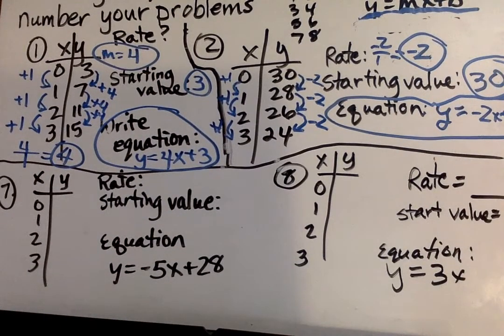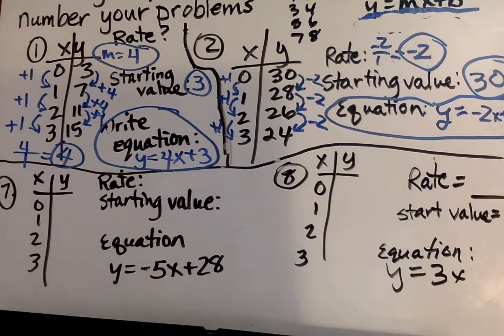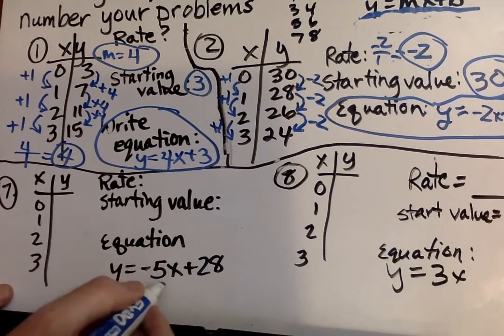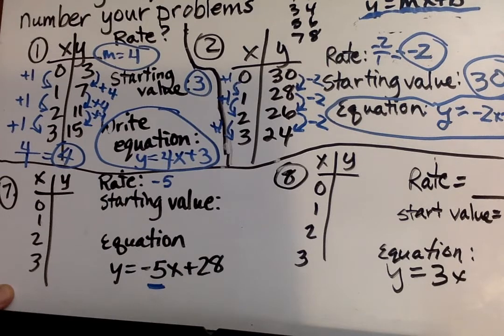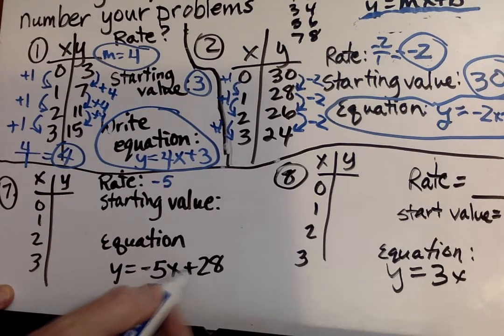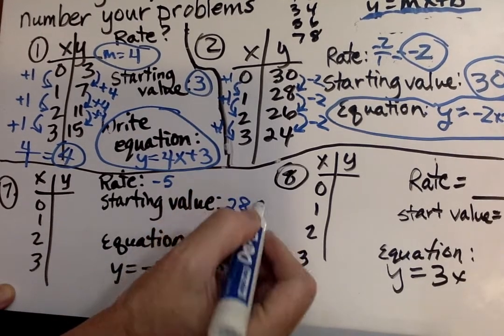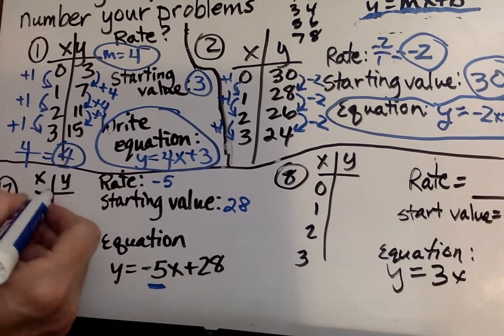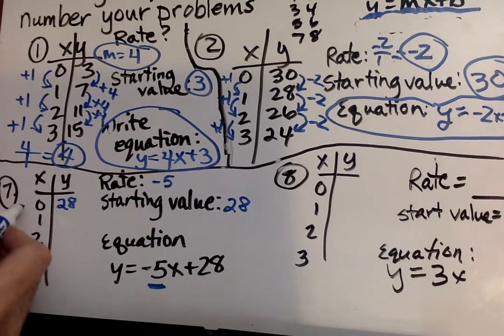Next, I'm going to jump down to number 7, that's just a little bit different. Now, we're given the equation here, and we have to figure out what goes for our Y values. First of all, our rate is just what's in front of X, so that's negative 5. Our starting value, if we put X in for 0, negative 5 times 0 is 0, plus 28. So our starting value would be 28. So if we put 0 in there, we get 28.